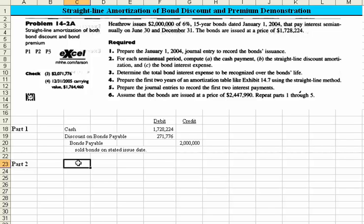Because we're using straight-line amortization, take note that the semi-annual amounts — the cash payment, the discount, and the bond interest expense — are always going to be the same throughout the life of the bond.